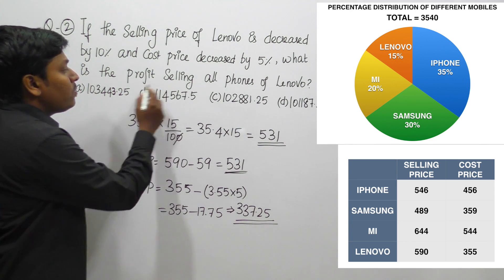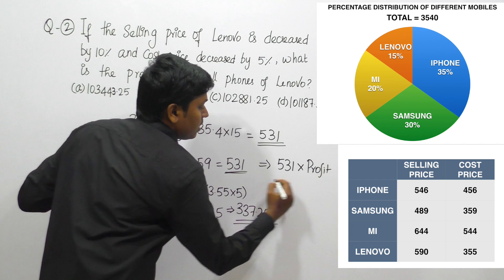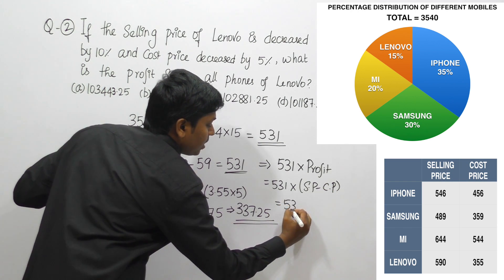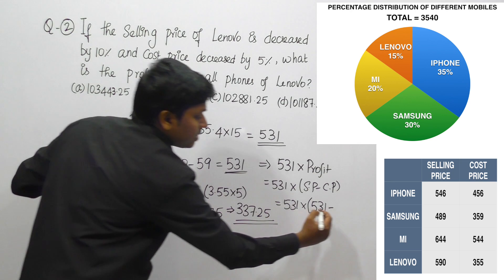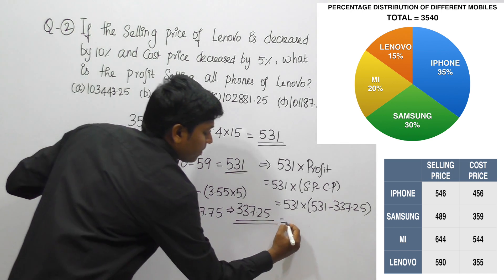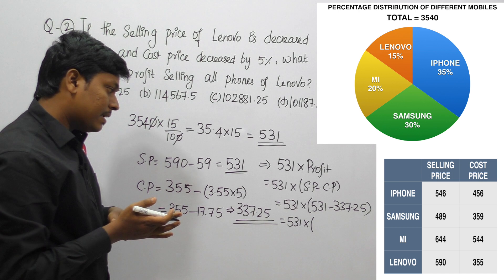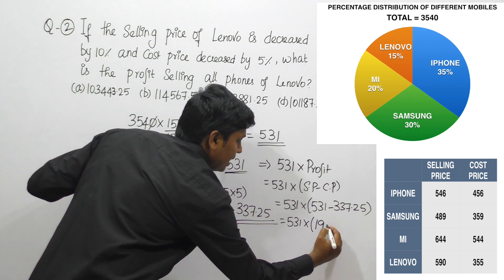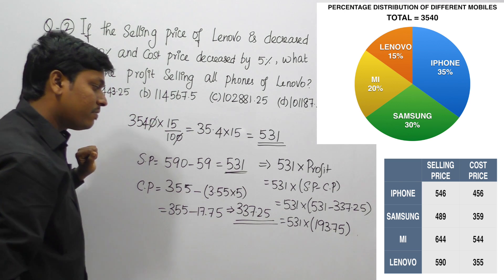We now have: new selling price = 531, new cost price = 337.25, and total Lenovo mobiles = 531. The profit per phone is selling price minus cost price: 531 − 337.25 = 193.75. So profit = 531 × 193.75.